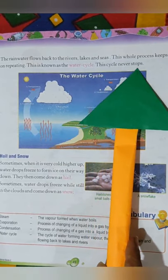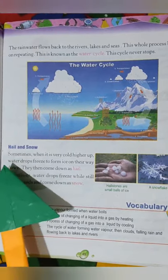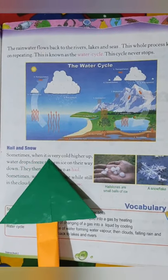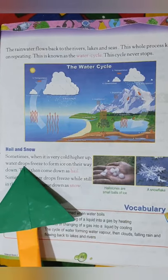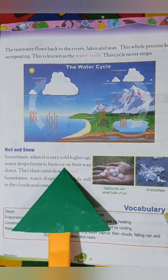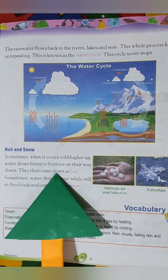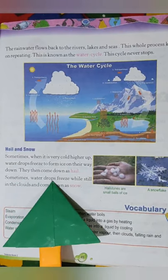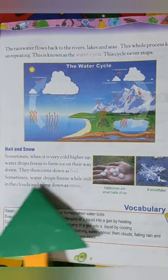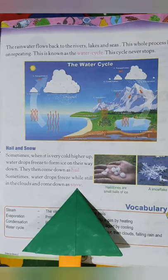Hail and snow: Sometimes when it is very cold higher up, water drops freeze to form ice on their way down. They then come down as hail. Sometimes water drops freeze while still in the clouds and come down as snow.